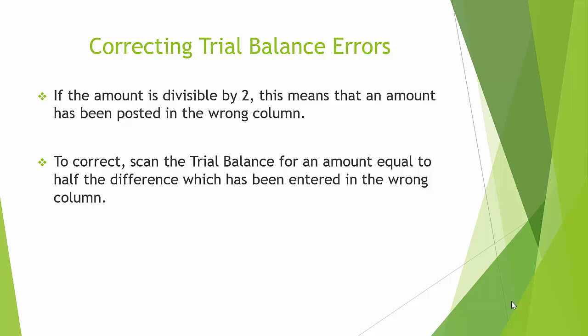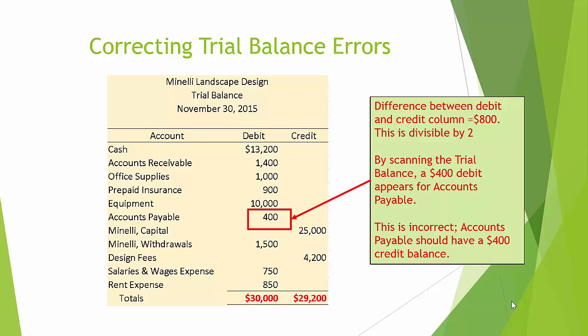To correct, scan the trial balance for an amount equal to half the difference which has been entered in the wrong column. In this case, the $800 difference is divisible by 2, so we're looking for a $400 amount posted in the wrong column. As we scan the trial balance, we see a $400 debit next to accounts payable — this is incorrect. By moving the $400 debit over to the credit column, our trial balance should now balance.